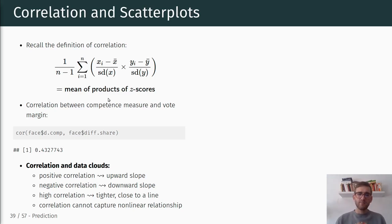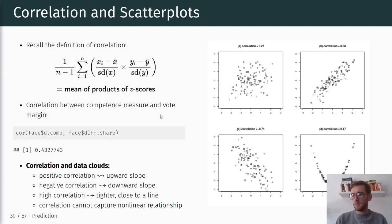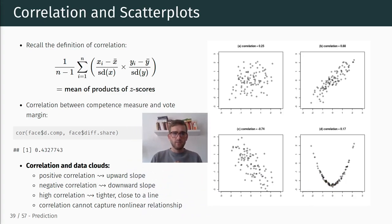If the correlation is high, as I mentioned, a high correlation doesn't necessarily say anything about the steepness of the slope — what it ultimately says is how tight the data points are around a hypothetical line that we could draw through that cloud. Also, correlation does not capture nonlinear relationships. To show this visually: a correlation coefficient of 0.25 is much lower than one of 0.88, so the higher the correlation coefficient, the tighter the data cloud is around the hypothetical line.